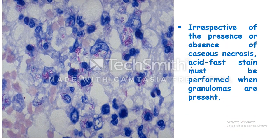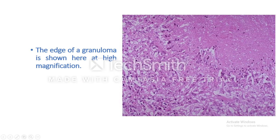Irrespective of the presence or absence of caseation necrosis, acid-fast stain must be performed when granulomas are present. Here you can see the tubercle bacilli — beautiful red rods with Ziehl-Neelsen stain. Always perform acid-fast stain or Ziehl-Neelsen stain to demonstrate mycobacteria, which appear as red rods inside the macrophage. At the edge of a granuloma, you can see the area of caseation necrosis, which in microscopic pathology we describe as homogeneous or sometimes granular eosinophilic material surrounded by epithelioid cells, lymphocytes, and fibroblasts.